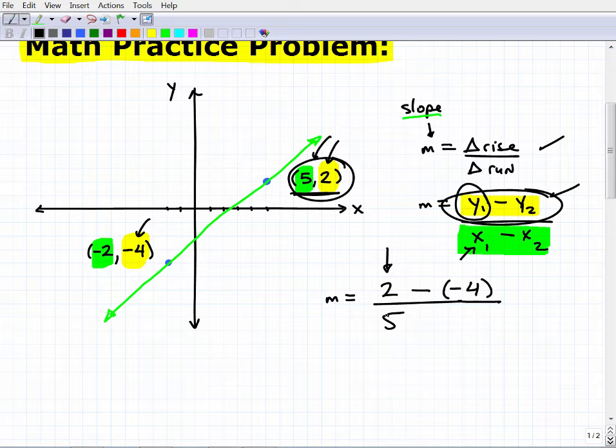Hopefully I explained that clear enough. So if I chose 2 as my y here, I can't choose this negative 2 here. I have to be consistent with the points. So 2 and 5 come from the same coordinate. So now it's going to be 5 minus the other x value, 5 minus minus 2, just like this.